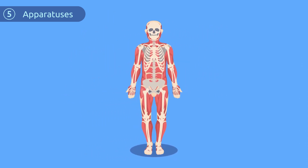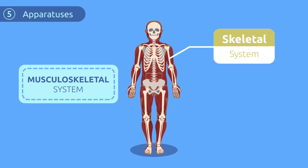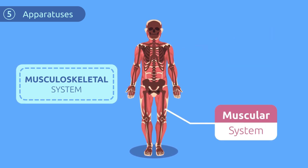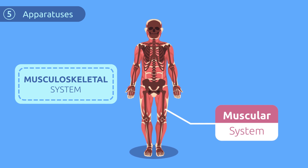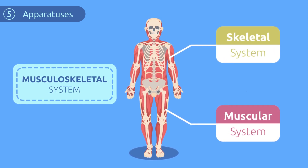Apparatuses are made up of different organs and systems that carry out a function together. For example, the musculoskeletal system consists of the skeletal system and the muscular system. Isn't it amazing what our body is capable of?